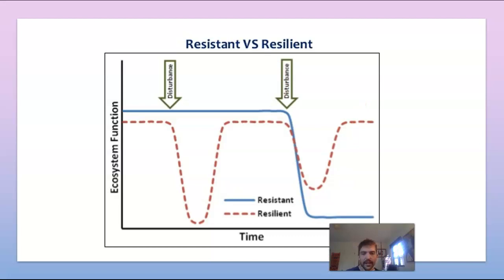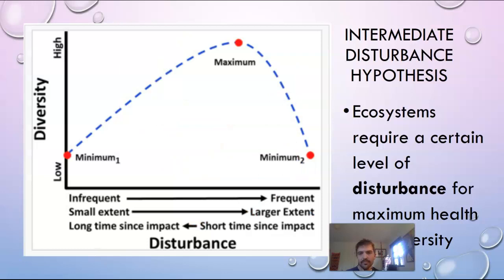The intermediate disturbance hypothesis states that ecosystems require a certain level of disturbance for maximum health and diversity. You can see that diversity is highest when there is a threshold of somewhat frequent disturbances. For example, forests here in New Mexico need fires in order to be healthy — and maybe that's a rule of nature for all of us: we need something to change things up, start over, and refresh.